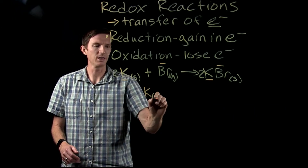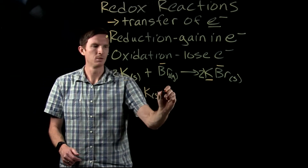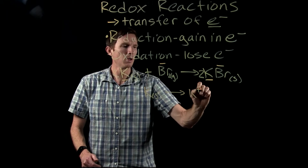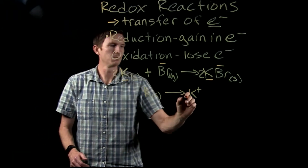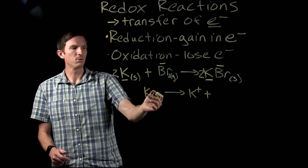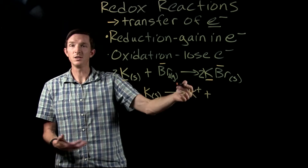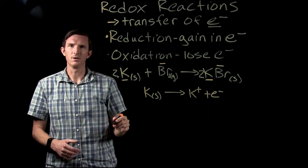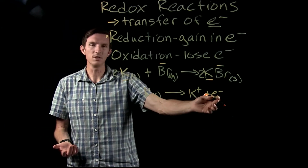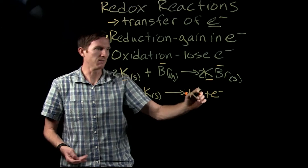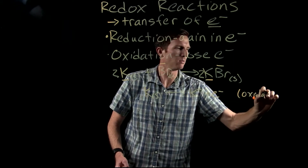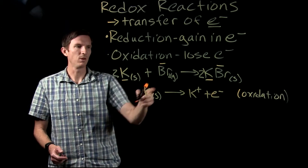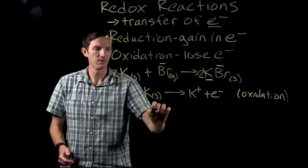Looking at potassium, we start with neutral potassium. In potassium bromide, it's now a +1 charged potassium ion. Going from neutral to positive means it's losing something negative — an electron. Therefore it's undergoing oxidation: it loses that electron and gives it away. So we have oxidation occurring with our potassium.